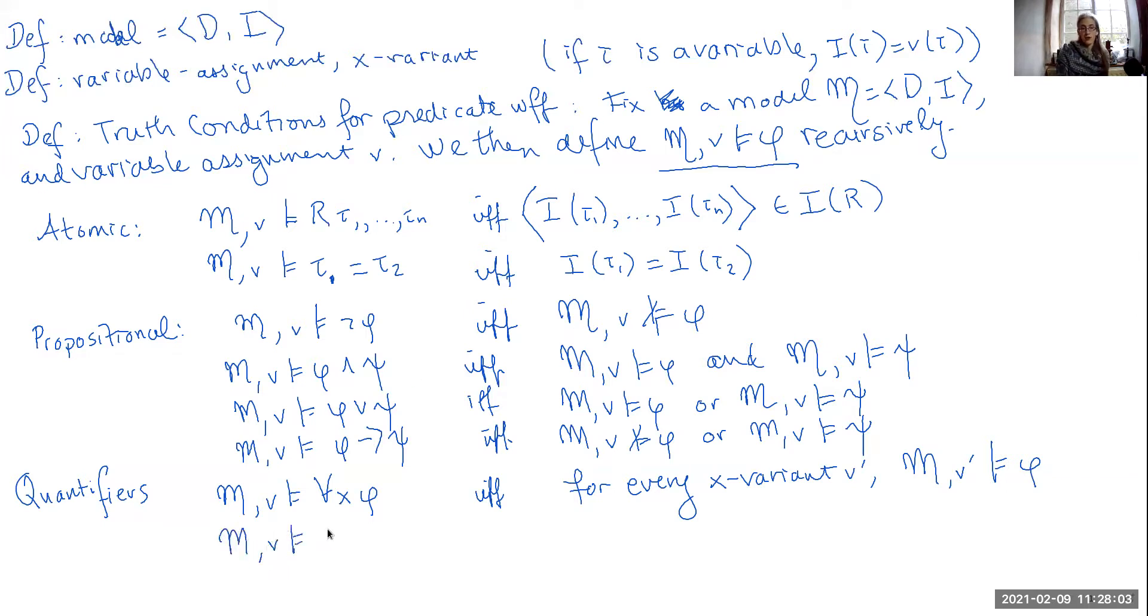Then it shouldn't be any surprise that the existential quantifier, so exists X phi, is going to be true if, for some X variant V prime, M V prime makes phi true.